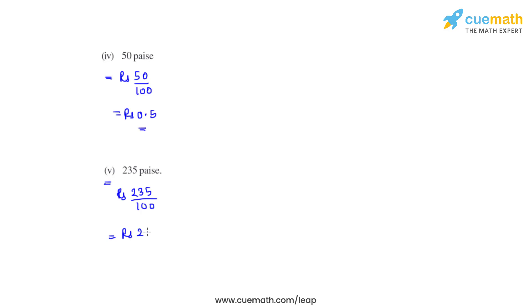So this is how we convert paise into rupees, that is by dividing them by 100 because 1 rupee equals 100 paise, and so we get the answers in decimal.